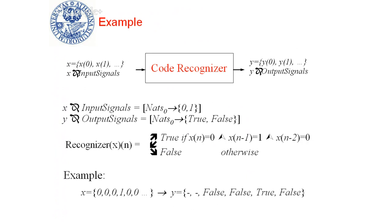Here is an example of the behavior. If you get this input sequence 0, 0, 0, 1, 0, 0, the corresponding output will be: not defined, not defined, false (because it is 0,0,0), false again (because it is 1,0,0), and true (because it is 0,1,0).